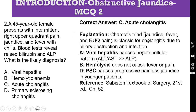Explanation: Charcot's triad — jaundice, fever, and right upper quadrant pain — is classic for acute ascending cholangitis due to biliary obstruction and infection. A is incorrect because viral hepatitis causes a hepatocellular pattern where ALT and AST will be much higher than ALP. B is also incorrect because hemolysis does not cause fever or pain. D is incorrect because primary sclerosing cholangitis causes progressive painless jaundice in young patients. Reference: Sabiston Textbook of Surgery, 21st edition, Chapter 52.